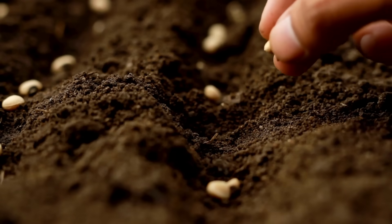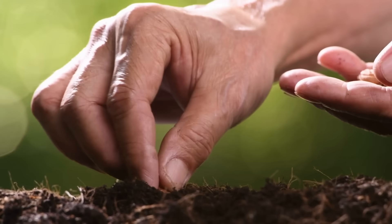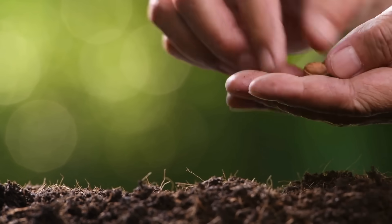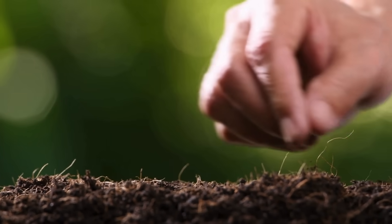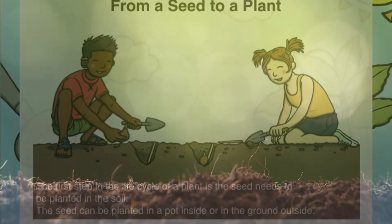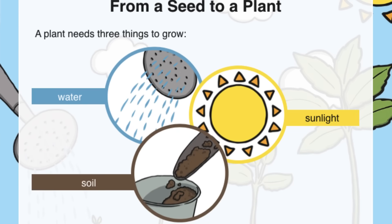Let's talk about that first life stage — what is it? Do you remember? That's right, it's the seed! From a seed to a plant, the first step in the life cycle is the seed needs to be planted in the soil. The seed can be planted in a pot inside or in the ground outside. A plant needs three things to grow: water, sunlight, and soil. Have you ever planted a seed before?